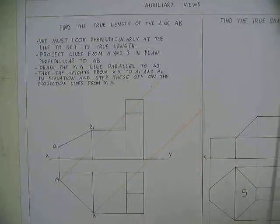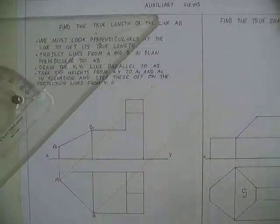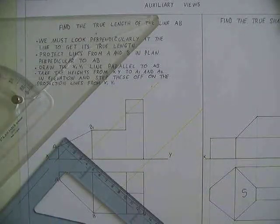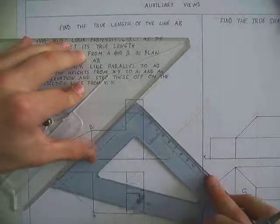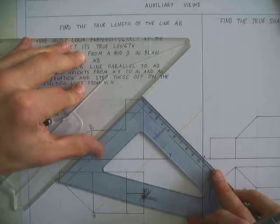Sorry, first of all, I must draw my X1,Y1 which must go parallel to AB, perpendicularly to the projection lines. So I am going to set up one set square along the projection lines.